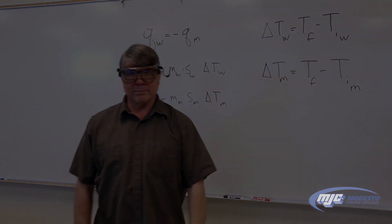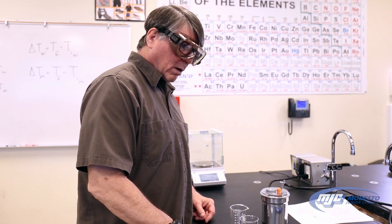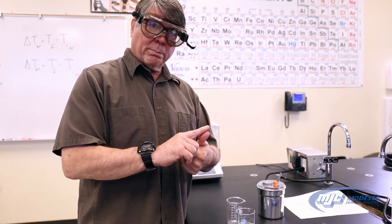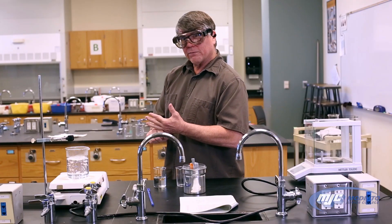So here we go. So specific heat capacity, there are some numbers we need to make sure we get. One of those is the mass of the metal. Another is the mass of the water. Initial temperature of the water, initial temperature of the metal, and the final temperature.